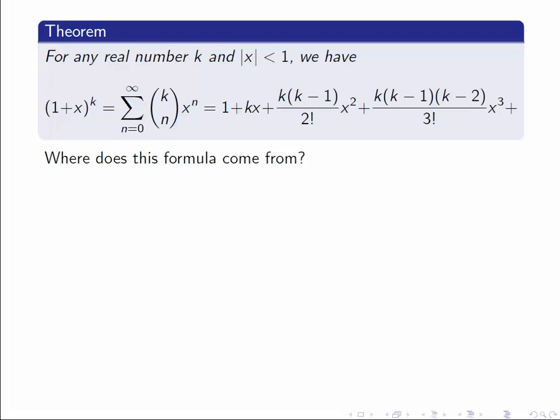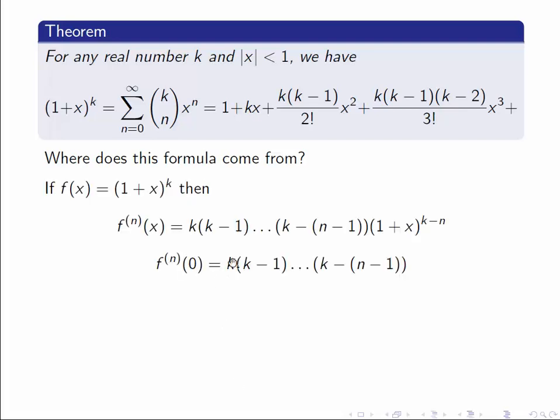Let's talk briefly about where this formula comes from. We know what the formula for a general Maclaurin series is. We need to find the nth derivative of the function and evaluate it at 0. So let's do this. If we differentiate this once, we get k times (1+x)^(k-1). We do it again, we get k(k-1)(1+x)^(k-2), etc.